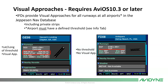Visual approaches are available for all runways and all airports in the JEP database, including private strips, but they must have a defined threshold. You can look that up on the info tab — if an airport has a lat/long associated with the runway thresholds, it will have a visual approach. If no lat/longs are listed, visual approaches are not available for that airport, so you can always check there to see.